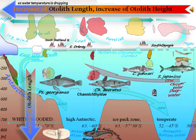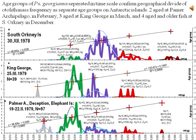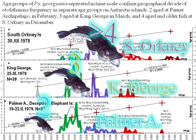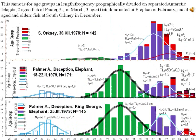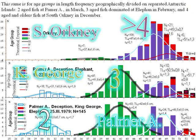For example, the decrease of otolith length and increase of otolith height as water temperature drops. Age groups of Georgianus separated in time scale confirm geographical division of otolith mass frequency as separate age groups on Antarctic islands: two-aged fish at Palmer Archipelago in February, three-aged at King George in March, and four years and older at South Orkney in December. This same pattern appears in both age groups in length frequency geographically divided on separated Antarctic islands.